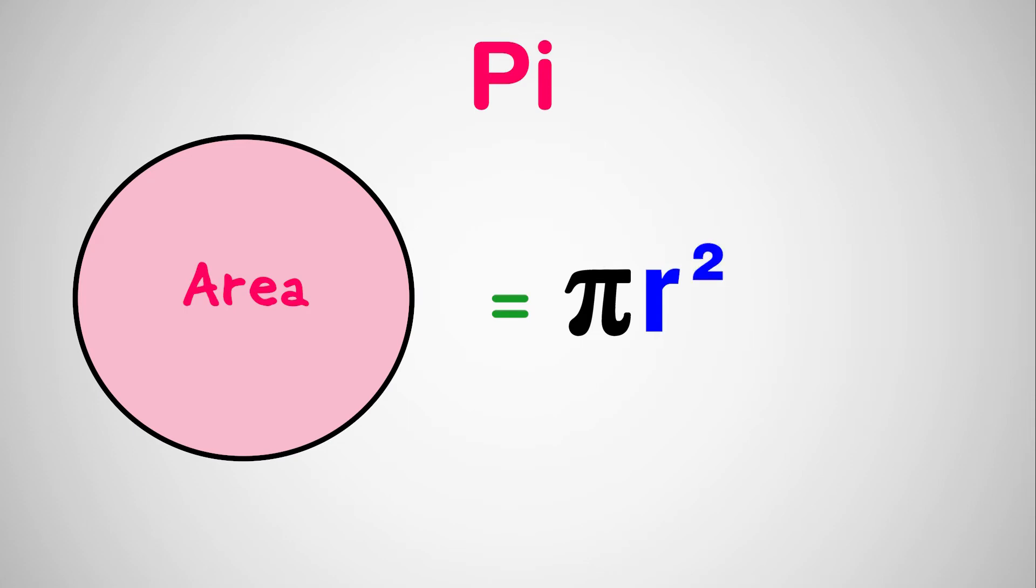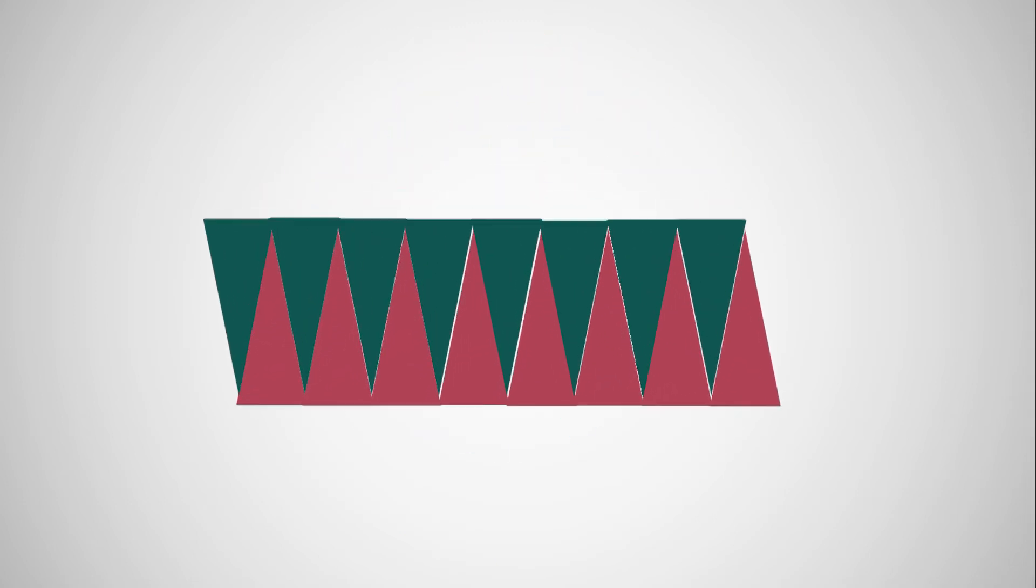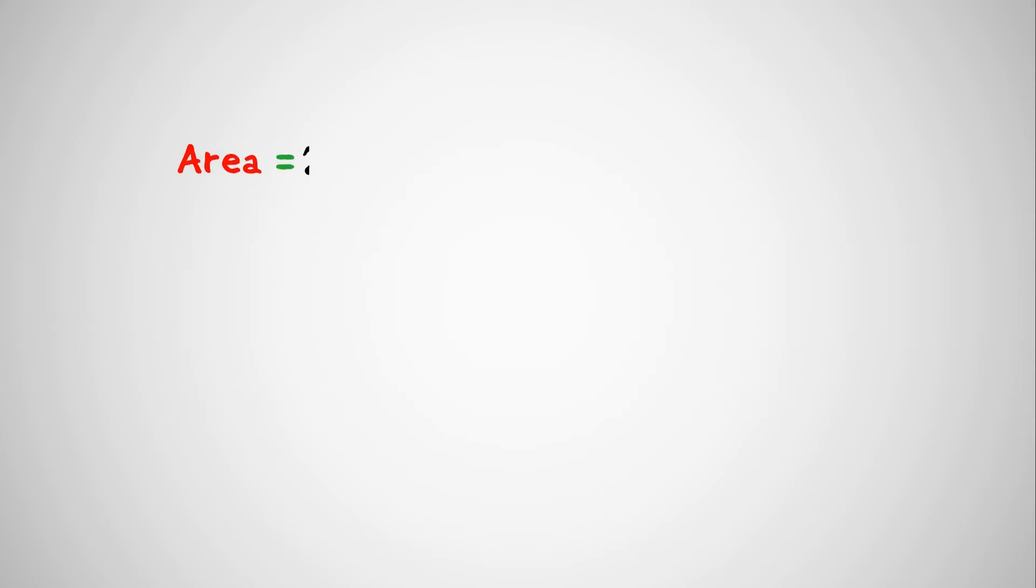But why is it pi r squared? Take a pizza and cut it into very thin slices, and then form these slices into a rectangle. This rectangle's area is now equal to the product of its length and width. Because half of the crust is on one side and half on the other, the rectangle's length is pi d divided by 2 or pi r. The width of rectangle is equal to the length of a slice of pizza or the radius of the original circle. So, area is pi r times r or pi r squared. If we keep the radius as unit distance, then the area of a unit circle is just pi. So, pi can be defined as the area of a circle with unit radius and its value is approximated at 3.14.